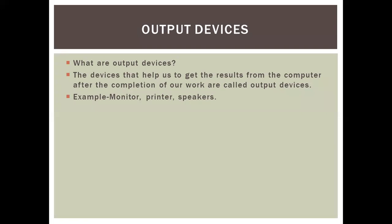Let's go to the next part, that is output devices. Now the devices that help us to get the results from the computer after we complete our work — suppose we've typed our name or we've done some drawing, and then we can see those things on the computer or on paper, or we can hear something we have put on our laptop or PC — these devices are called output devices.